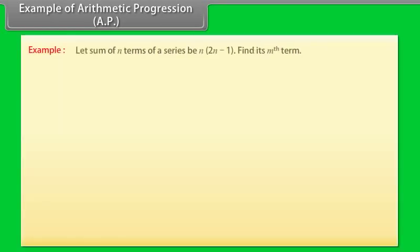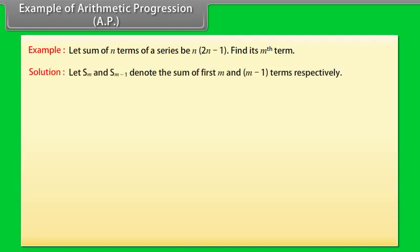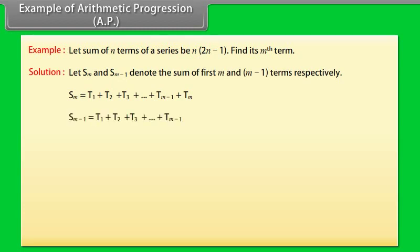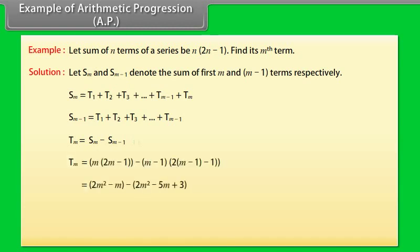Example of AP: Let the sum of N terms of a series be N(2N−1). Find its Mth term. Solution: Let SM and SM−1 denote the sum of the first M and M−1 terms respectively. TM = SM − SM−1. On solving, we get TM = 4M − 3.